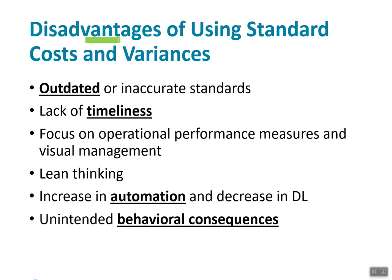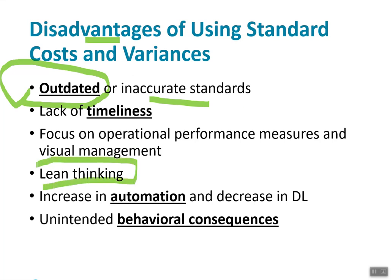Some disadvantages of using standard costs and variances: standard costs can become outdated relatively quickly, causing an inaccurate standard. There's also a lack of timeliness, since some companies want just-in-time, up-to-date information — which is where lean thinking comes in again. The focus on operational performance measures and visual management can be undermined. Also, because of the increase in automation and decrease in direct labor, standard costs are not as valuable, which is why only about 10% of companies use them. Unintended behavioral consequences are another concern.